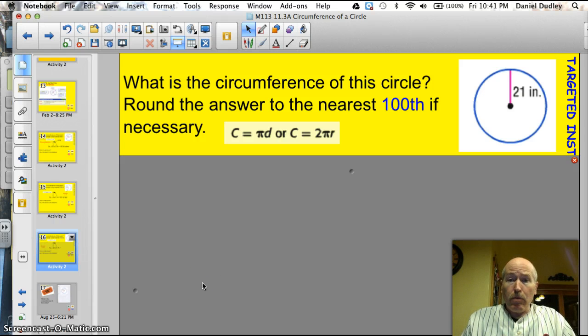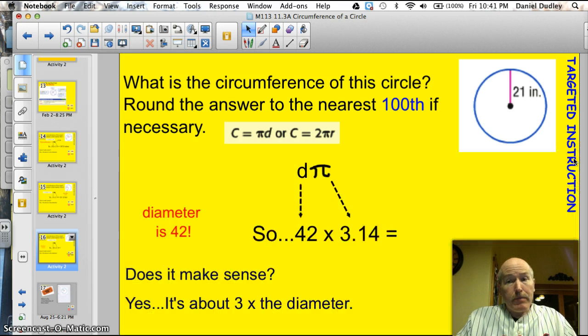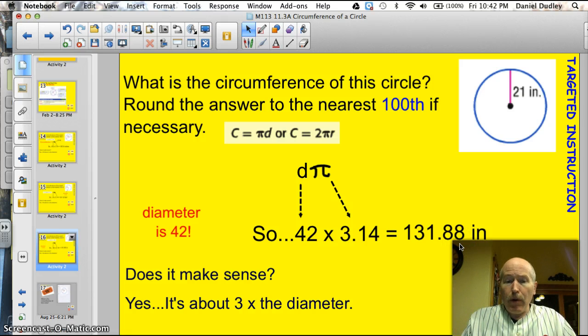What is the circumference of this circle? Round the answer to the nearest hundredth, if necessary. Go ahead. All right. Well, my only question is, did you remember to double that radius? I hope so. So, the radius is 21, which would make the diameter 42. So, I took 42 times 3.14, popped it into the calculator, and I got 131.88 inches. Let me see. I'm supposed to round to the nearest hundredth. Hey, I'm right on the nearest hundredth, so I don't have to go any further.